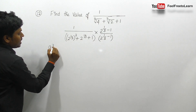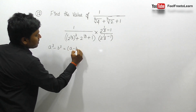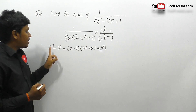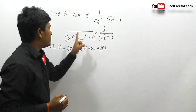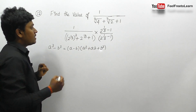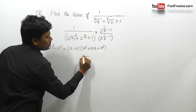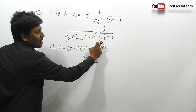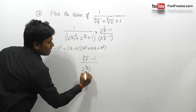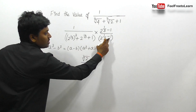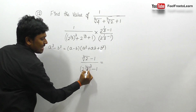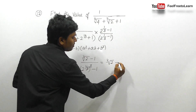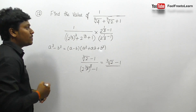We know the formula: a³ - b³ = (a-b)(a²+ab+b²). So the denominator term becomes a³ - b³ format. The numerator becomes 2^(1/3) - 1, which is ∛2 - 1. The denominator: a = 2^(1/3), so a³ = 2; b = 1, so b³ = 1. Therefore the denominator is 2 - 1 = 1.